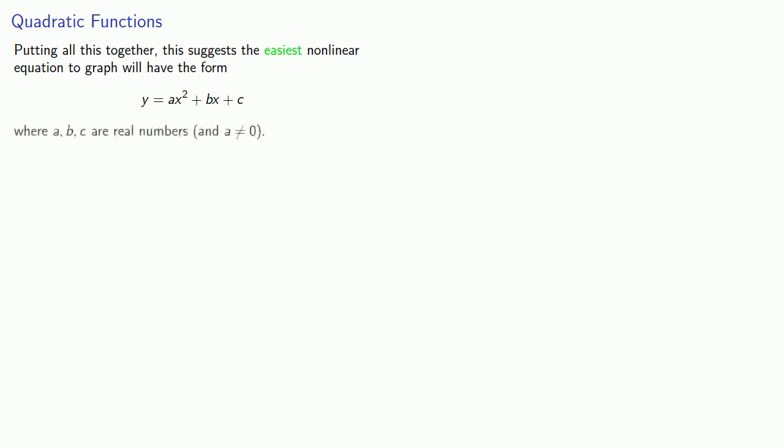Putting all these together, this suggests that the easiest nonlinear equation to graph will have the form y equals ax squared plus bx plus c where a, b, and c are real numbers and a is not equal to zero.